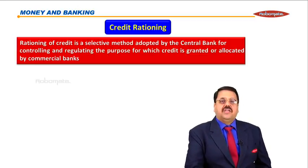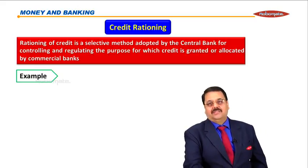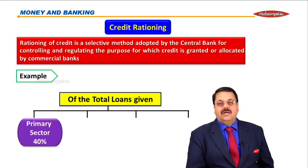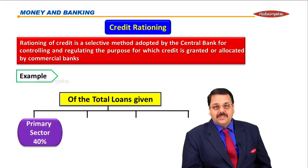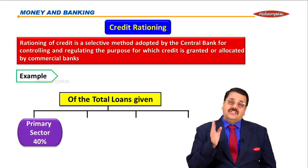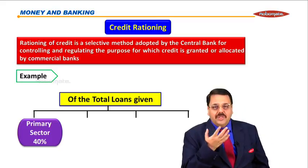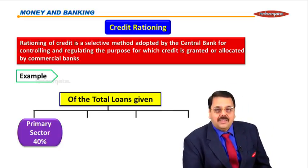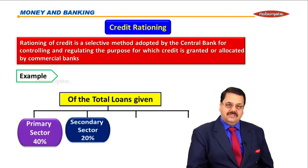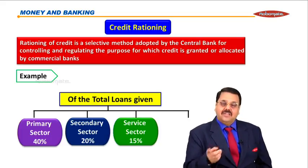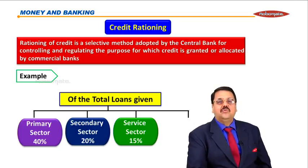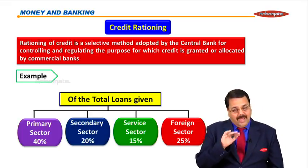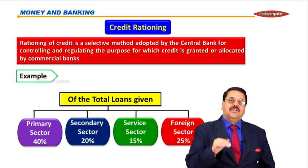Controlling and regulating the purpose for which credit is granted or allocated by commercial banks. For example, of the total loans given, distribute the money: primary sector is very important. Why? If the primary sector doesn't develop, people will not get food to eat. So give credit contribution to agriculture sector, secondary sector, service sector, and also foreign sector — 25%. This will ensure balanced development of all sectors and proper development of the country.